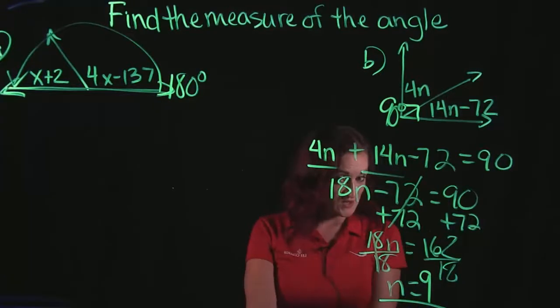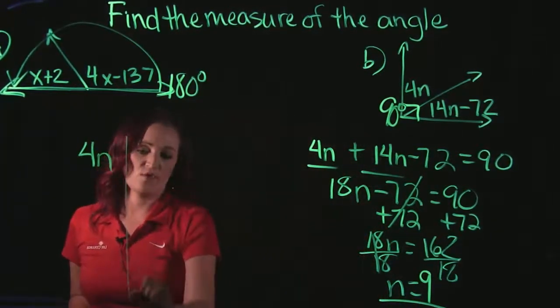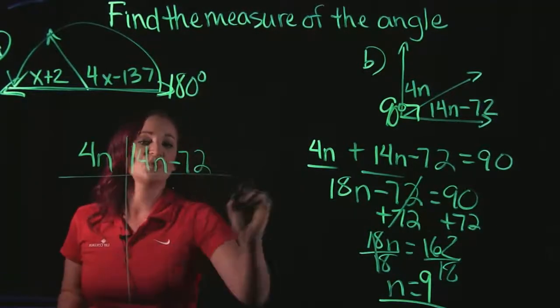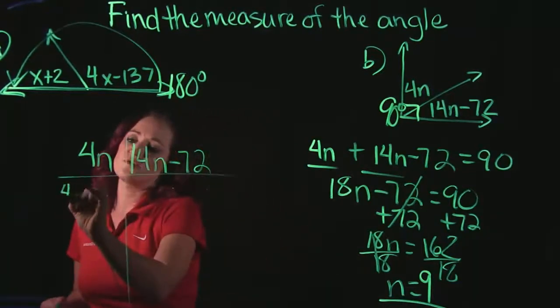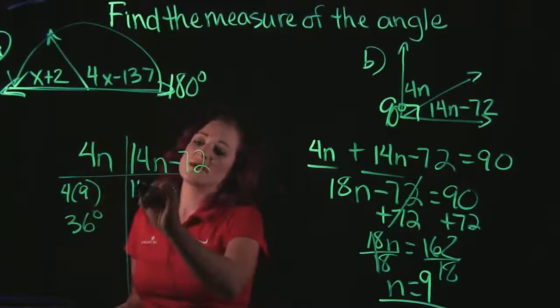So again, remember, this is not the solution here. We need to go back, and our two angles were 4n, and then 14n minus 72. And we need to take this 9 and plug it into the problem. So first we have 4 times 9, which is going to give us 36 degrees.